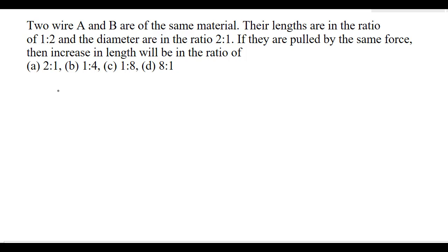Two wires A and B are of the same material. Their lengths are in the ratio 1:2 and their diameters are in the ratio 2:1. If they are pulled by the same force, then the increase in length will be in the ratio — and there are four options.